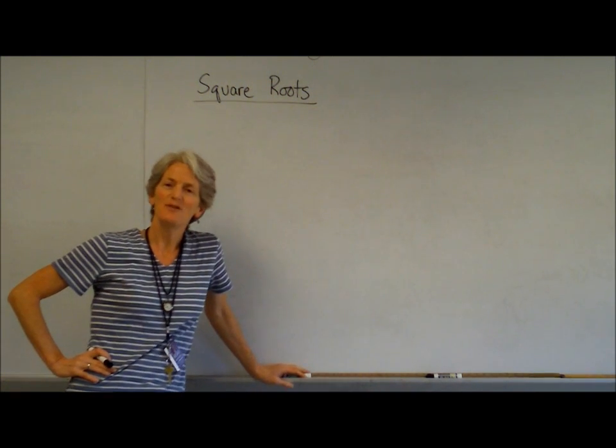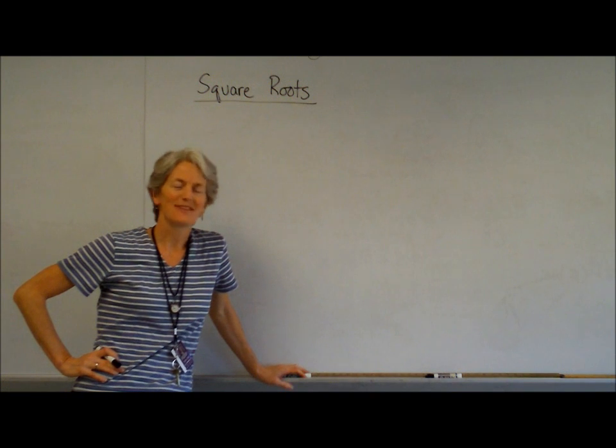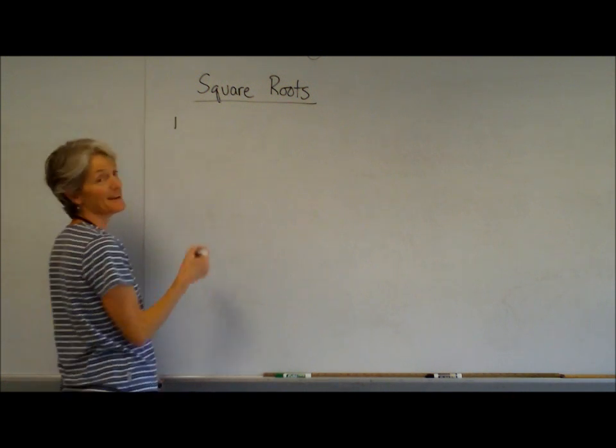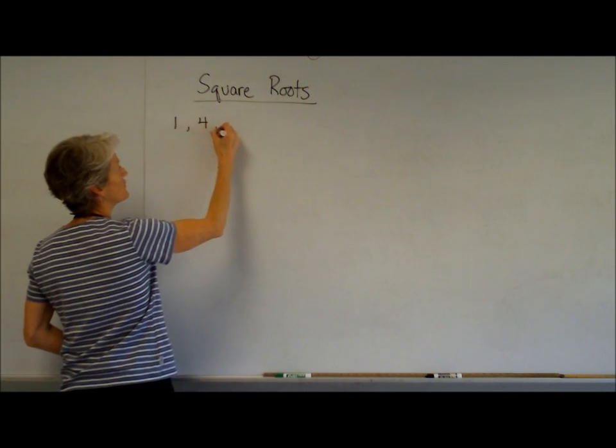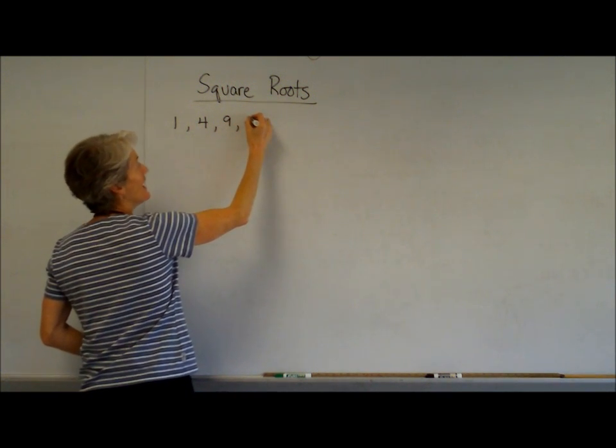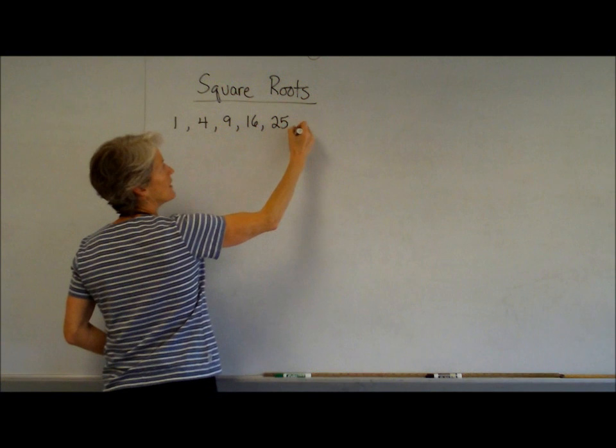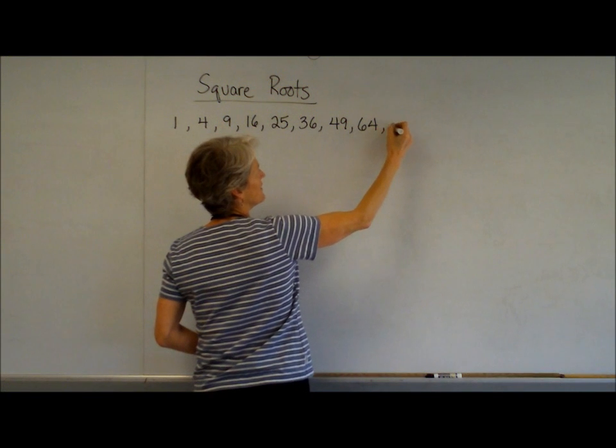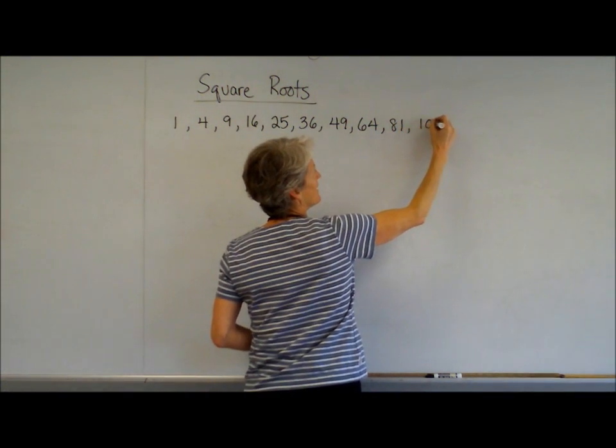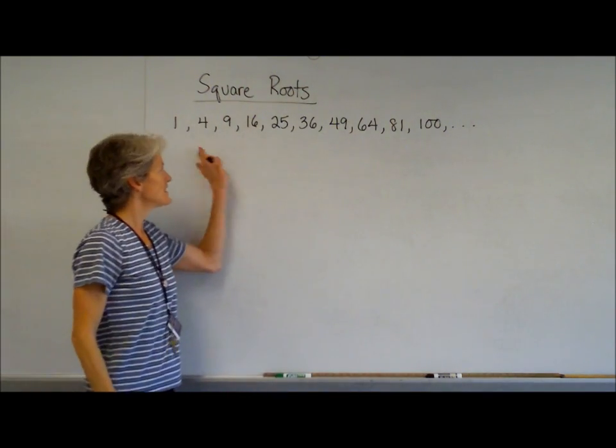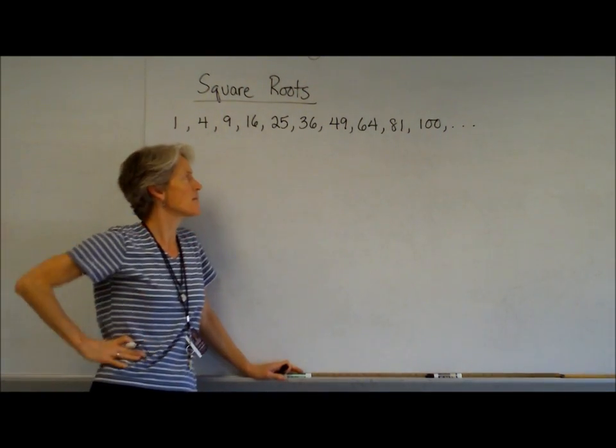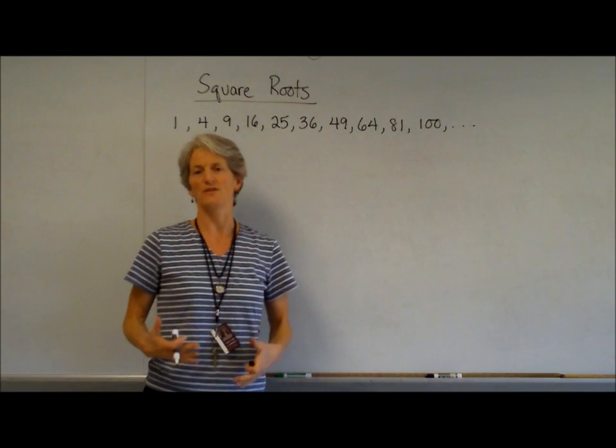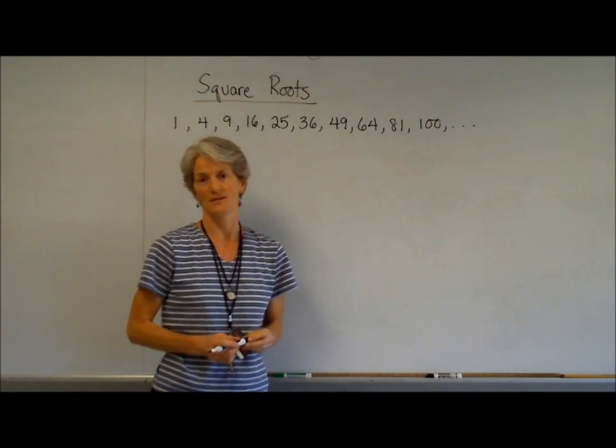What I like to do before I even do anything is just list out my perfect squares. 1 squared is 1, 2 squared is 4, 3 squared is 9, 16 is 4 squared, 25, 36, 49... Make yourself a list. Stick it on the top of your piece of paper because whenever you're going to be simplifying these things, you're going to be looking for a perfect square that you can take out.